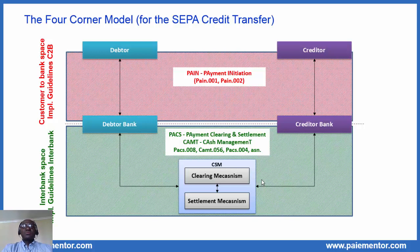In the customer to bank space, you find messages that are sent from customers to banks and messages that are sent from banks to customers. And in the interbank space, you find messages that banks exchange among themselves directly or through a clearing system like EBA Step 2, for example, for SEPA. The PACS 8 described in the interbank implementation guidelines is the one that banks exchange among themselves, but it is not the one that they exchange with clearing systems. Clearing systems generally have their own specifications for the format that banks must use. Banks are required to provide additional information in the header of messages that they send to the CSM.